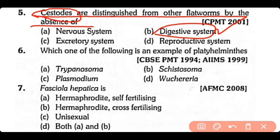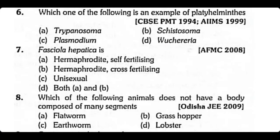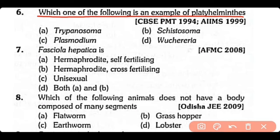Question no.6. Which one of the following is an example of Platyhelminthes: Trypanosoma, Schistosoma, or Plasmodium? The correct answer is option B. Schistosoma, or blood fluke, is an example of phylum Platyhelminthes.